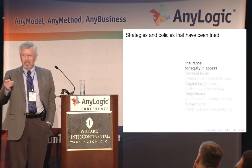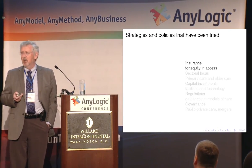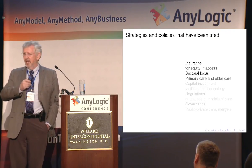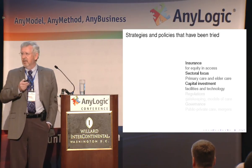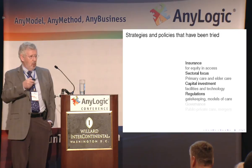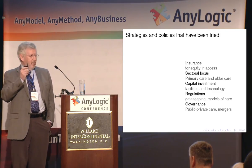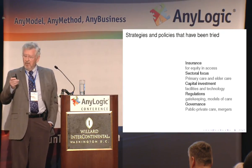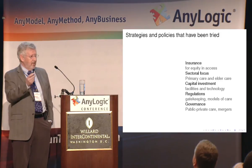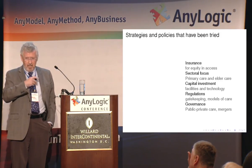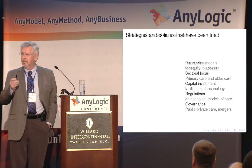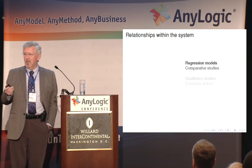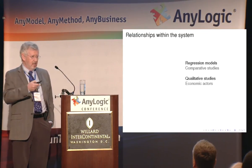The strategies include insurance — you know about that in the United States, Canada, and European countries. Sectoral focus: focusing on primary care as opposed to acute care. Capital investment — we've known about that for years. Regulations: who gets to say who gets into the system. And then governance: do you have private systems owned by the government or by enterprises, or public systems?